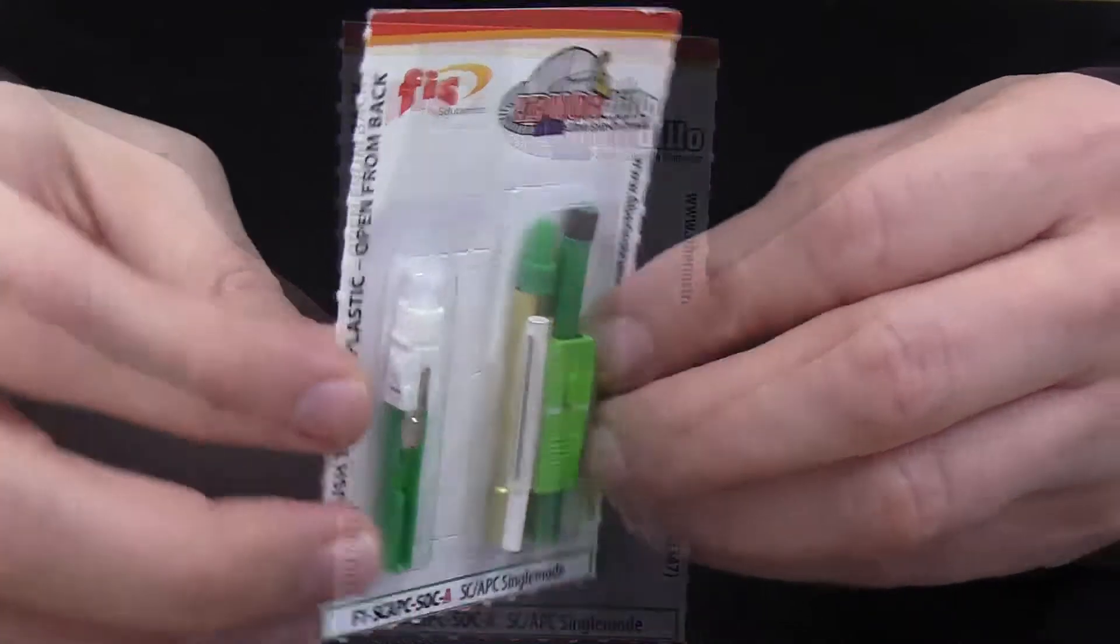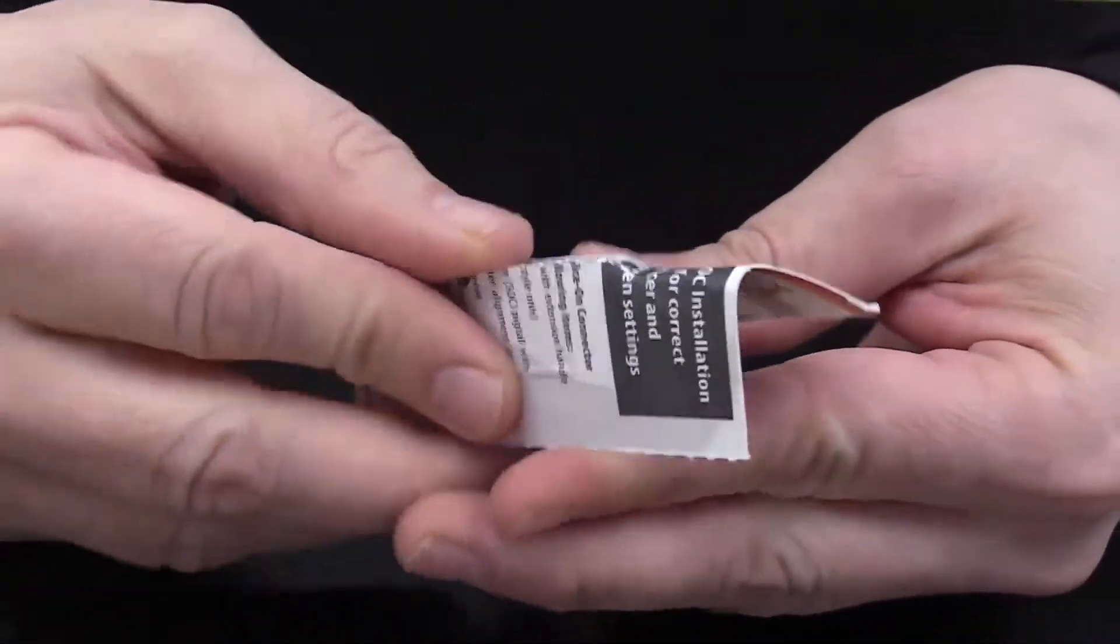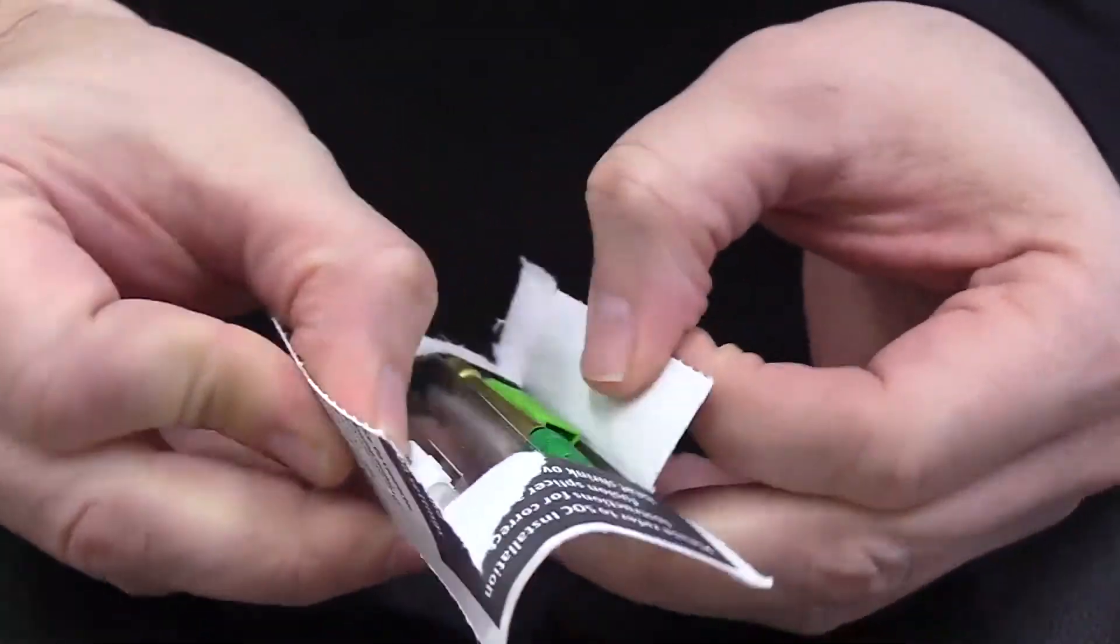Take the FIS Splice-on Connector Blister Pack and turn it upside down. Fold in half and open it from the back.